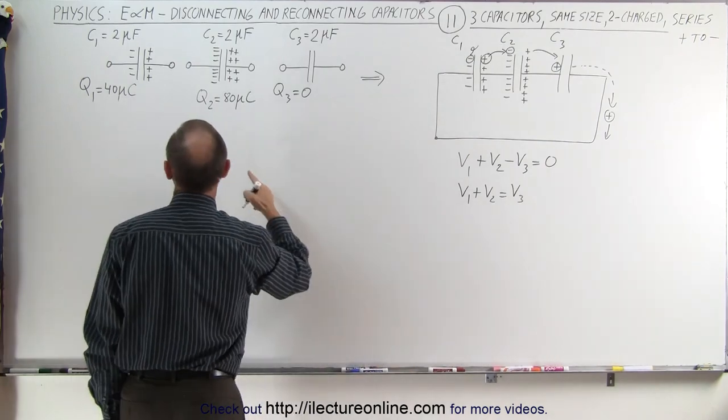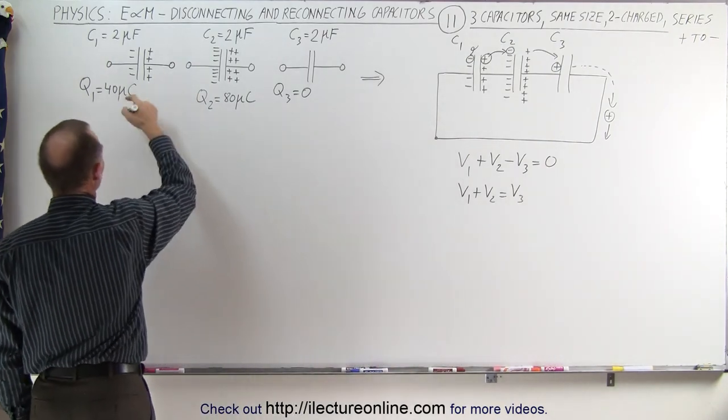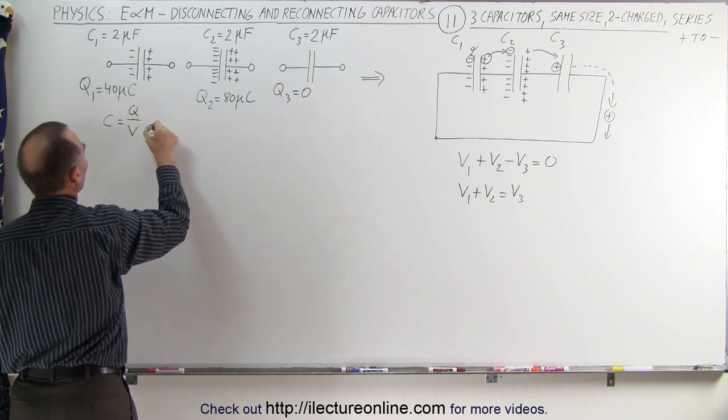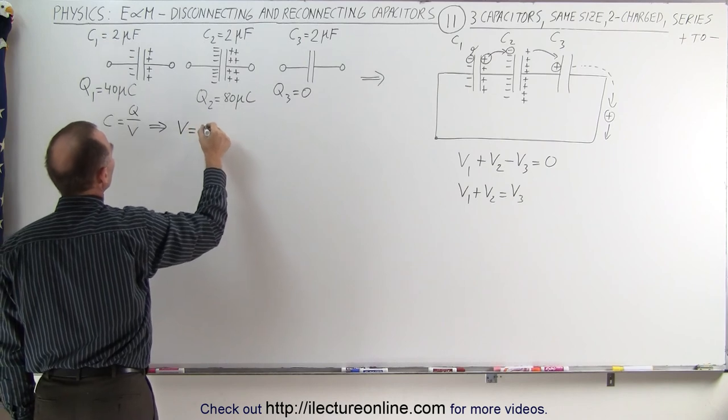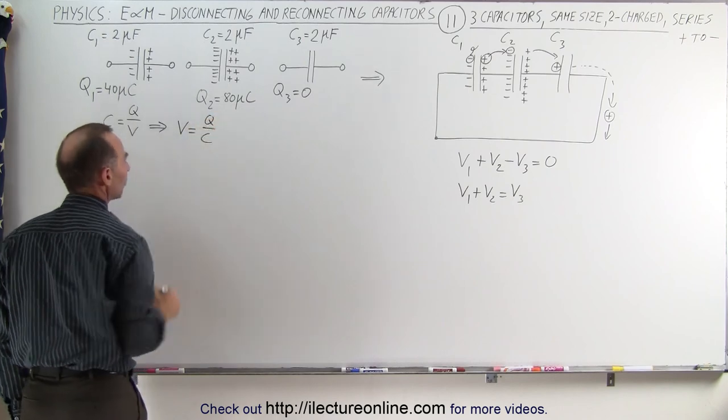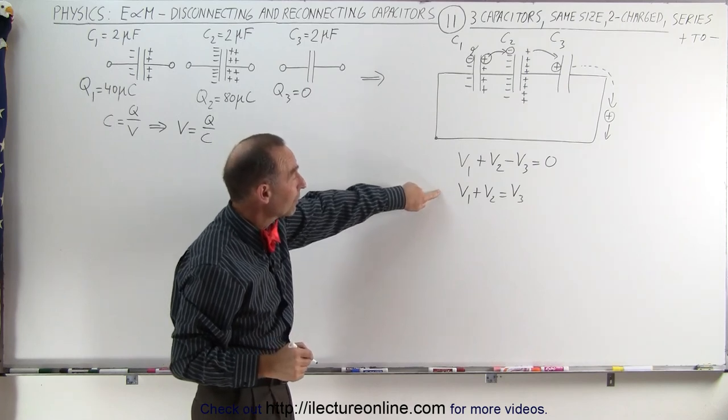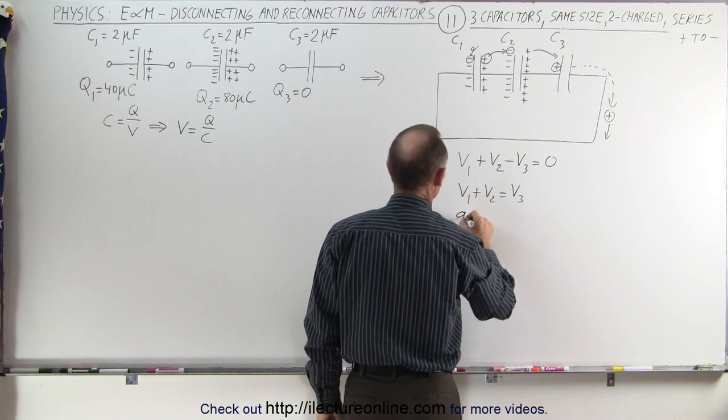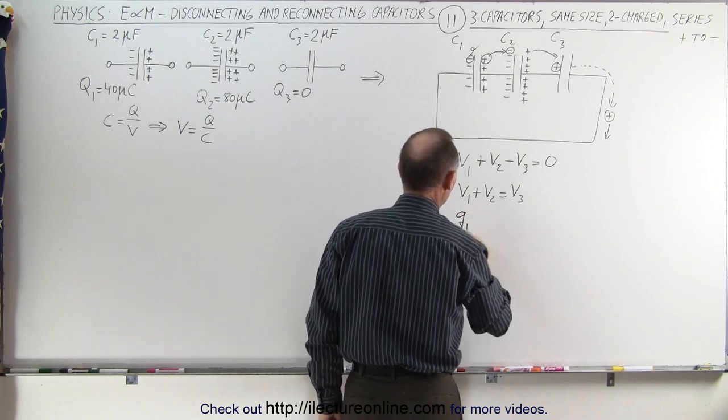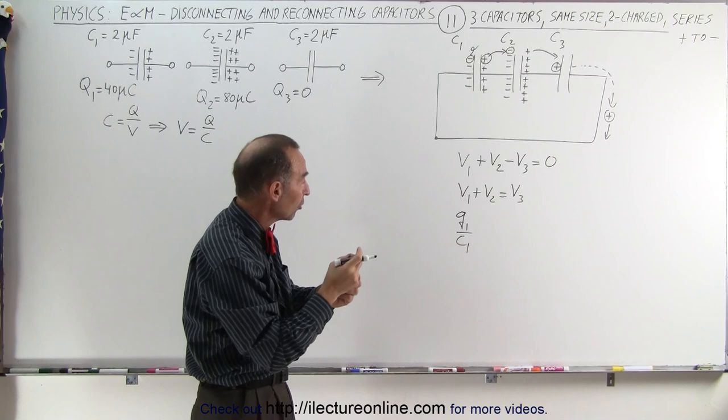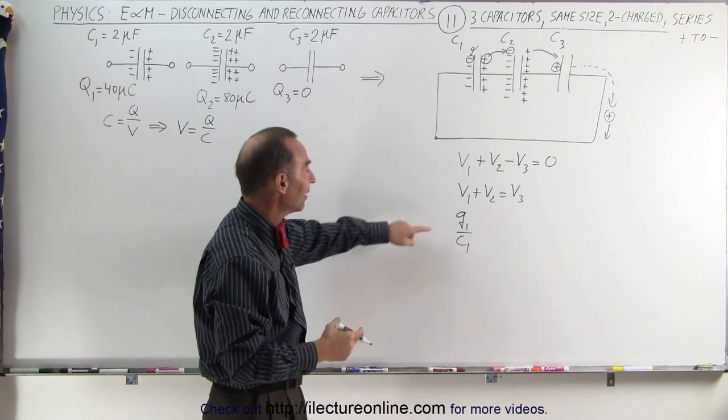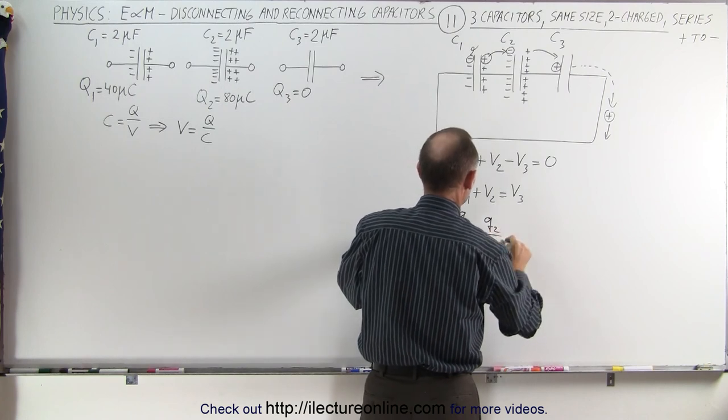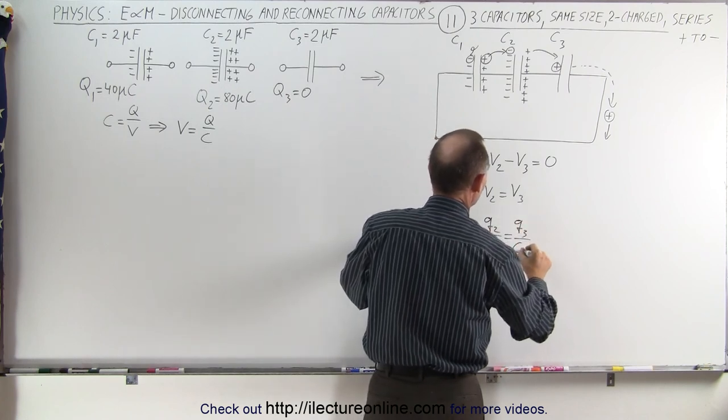Then we realize again that the relationship here on the capacitor, we can say that capacitance by definition is charge divided by voltage, which means that we can write voltage is equal to charge divided by capacitance. That means we can take this equation right here and write it as Q over C for each of the three voltages. This becomes Q1 over C1, Q1 being, of course, the charge at the very end, at steady state on capacitor 1, plus Q2 divided by C2, which is equal to Q3 divided by C3.